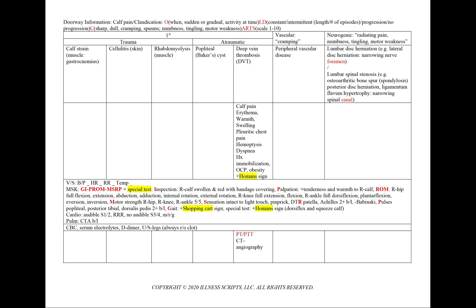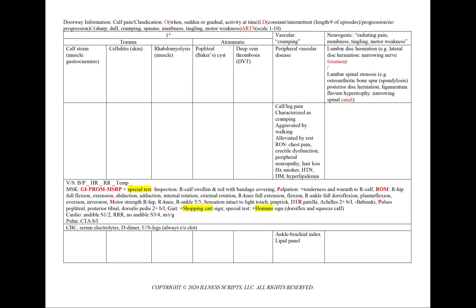For DVT, we add PT and PTT to our workup for any case involving blood. If we see hemoptysis and dyspnea, we order CT angiography. For a vascular cause, our differential is peripheral vascular disease. We'll see calf or leg pain characterized as cramping, aggravated by walking — the angina of the leg — and alleviated by rest. In the review of systems, we note chest pain, erectile dysfunction, peripheral neuropathy, or hair loss.